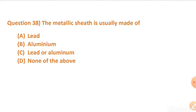The metallic sheath is usually made of: option A, lead; option B, aluminium; option C, lead or aluminium; option D, none of the above.